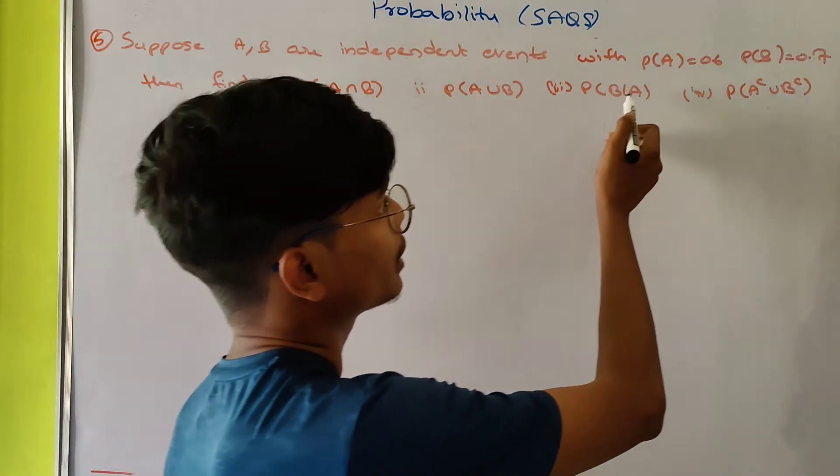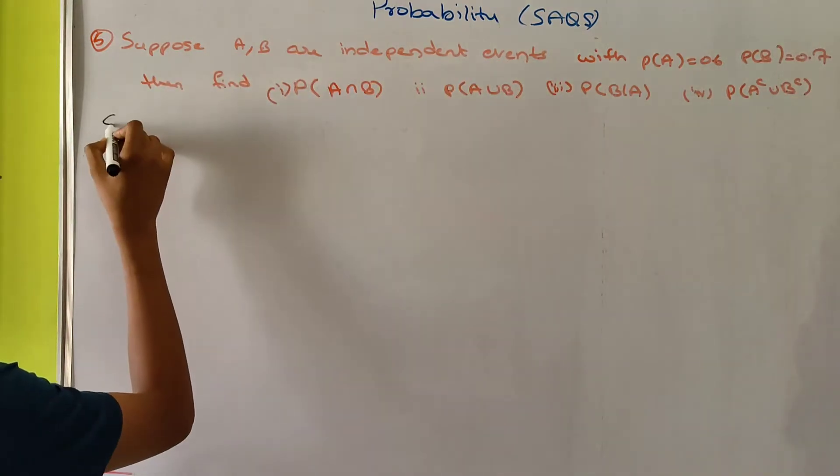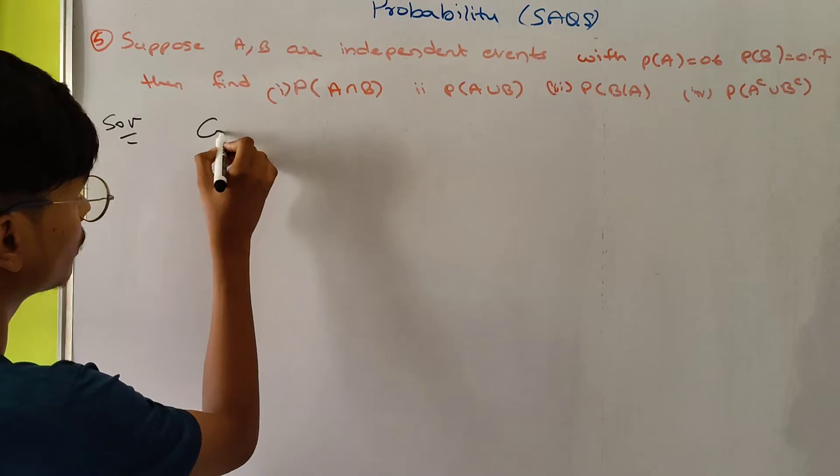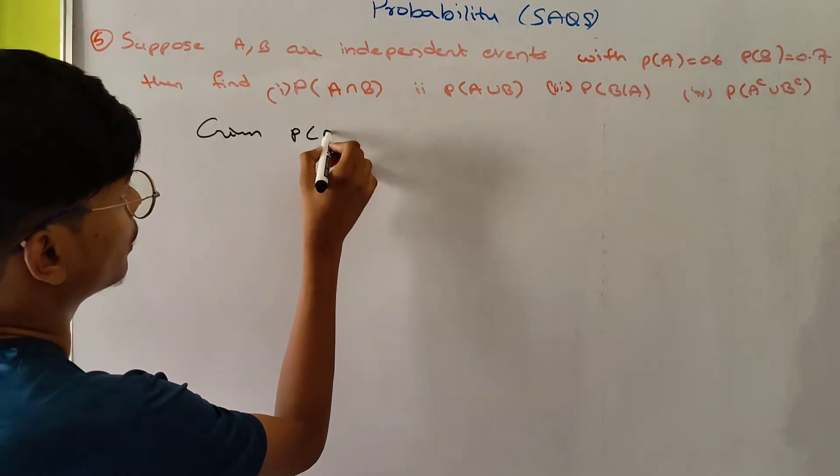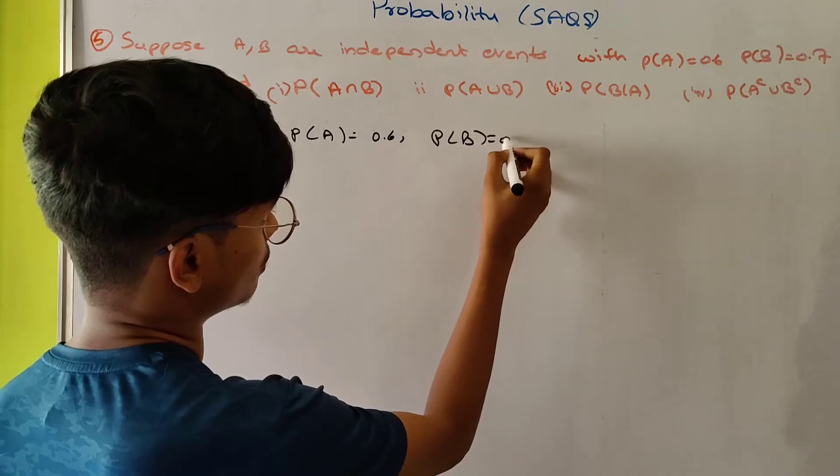Suppose A and B are independent events with P(A) = 0.6 and P(B) = 0.7. Solution: Given P(A) is equal to 0.6, P(B) equals 0.7.